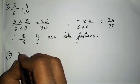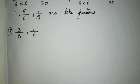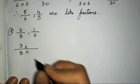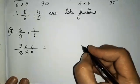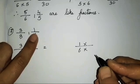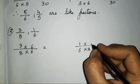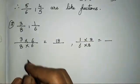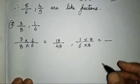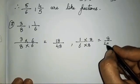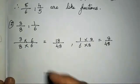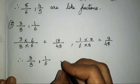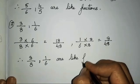The seventh sum is 3 upon 8 and 1 upon 6. In the 8s table 6 will not come and in the 6s table 8 will not come. So we multiply the first fraction by 6 and the second fraction by 8. First fraction: 3 sixes are 18, 8 sixes are 48. Second fraction: 1 eight is 8, 6 eights are 48. We have got the denominators the same, therefore 3 upon 8 and 1 upon 6 are like fractions.